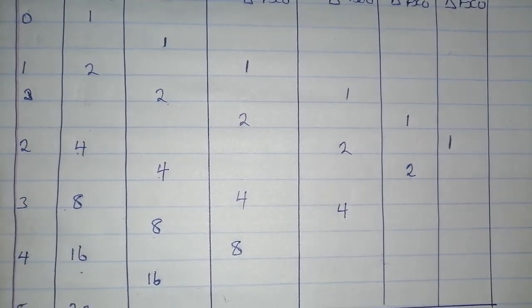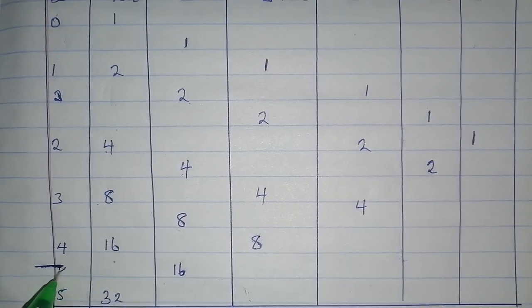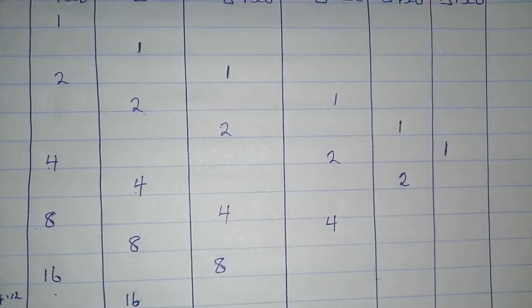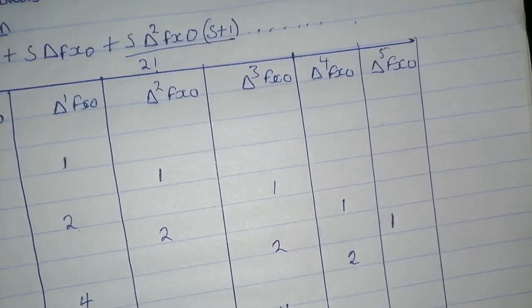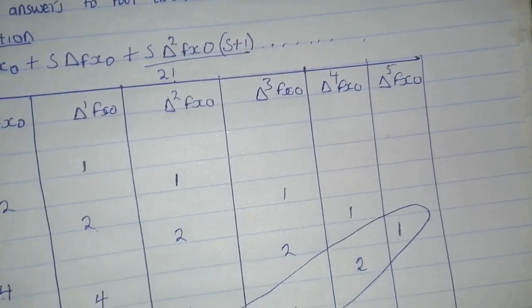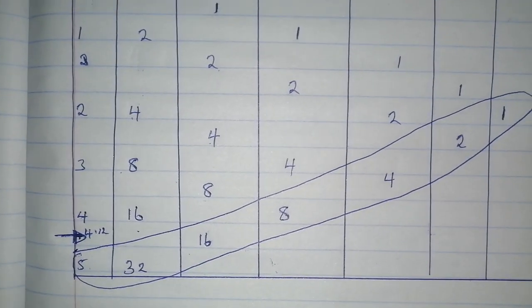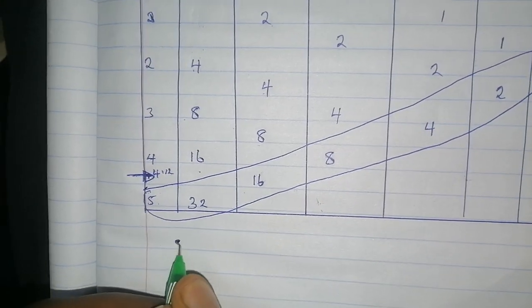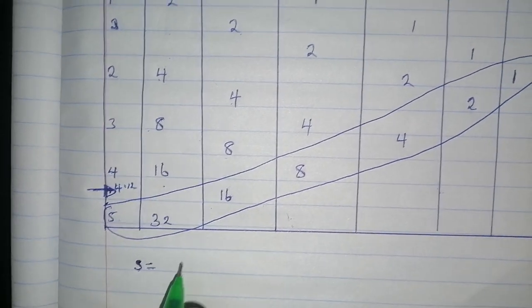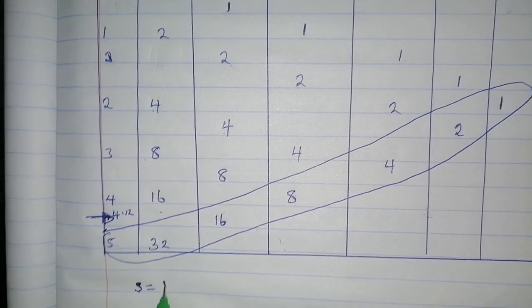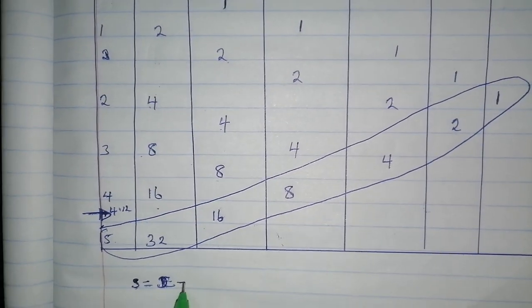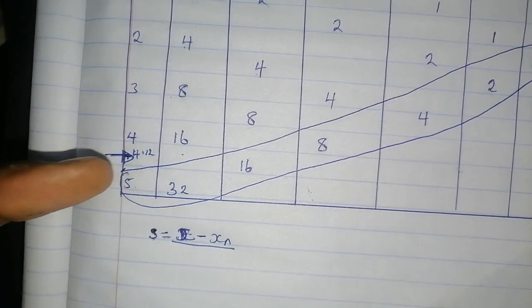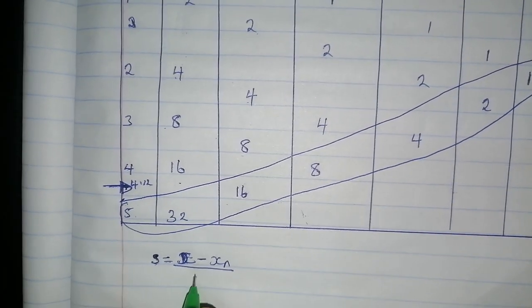Our 4.12 will be between 4 and 5 here. This means we'll use these values to calculate our problem. In our formula, we have S. When finding S, we say S equals x minus x_n divided by the difference between the values, the interval. In our case it's 1.